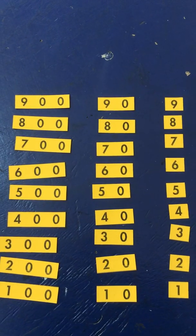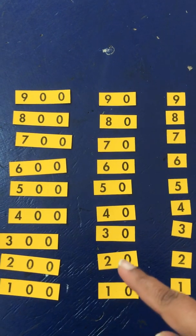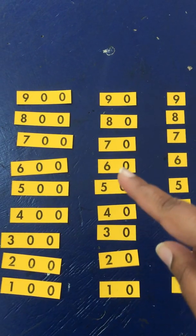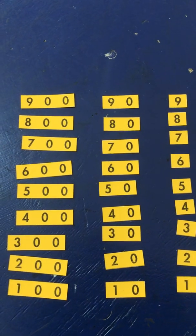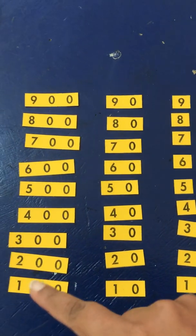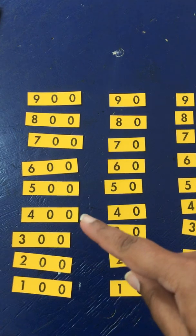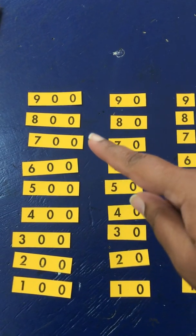Then you're going to do a tower of tens: 10, 20, 30, 40, 50, 60, 70, 80, 90. And lastly, you're going to do a tower of hundreds: 100, 200, 300, 400, 500, 600, 700, 800, 900.